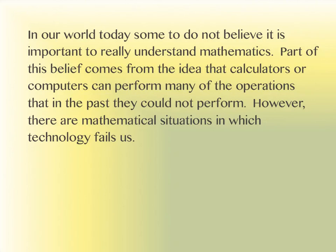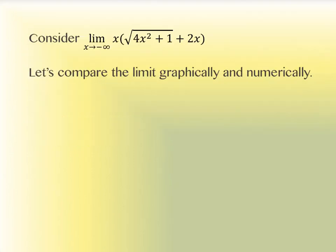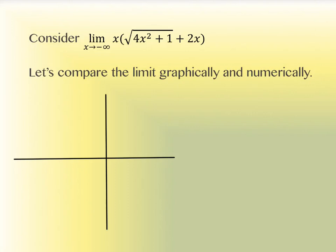What I'd like us to look at in this section is that there are mathematical situations where our technology simply doesn't work right. A lot of that has to do with looking at things as they get infinitely large or infinitely small — that is, our limits as we approach positive and negative infinity. The first one I want us to look at is this particular function: x times the square root of 4x² + 1, plus 2x, and we're going to take a look at this limit as x approaches negative infinity.